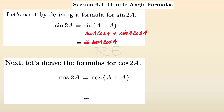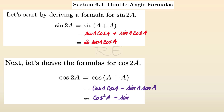If we understand cosine 2a to be cosine of (a + a), then cosine 2a is equal to cosine a times cosine a minus sine a times sine a, from the previous formula, which gives us cosine squared a minus sine squared a. So cosine 2a is equal to cosine squared a minus sine squared a.